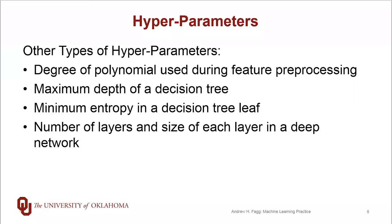In both of those cases we're reducing the complexity of the trees by introducing these kinds of constraints. For those who have dealt with deep networks — we won't cover those in class but there's lots of good material out there — the number of layers or the size of each layer in terms of the number of neurons are also hyperparameters that one can adjust.